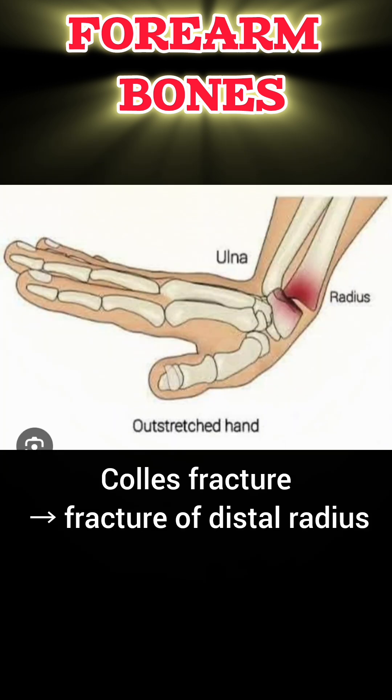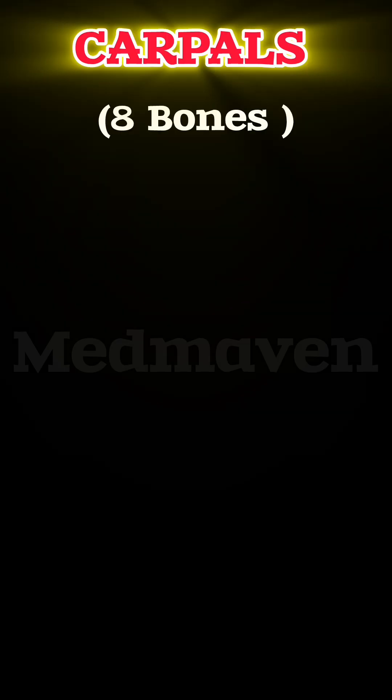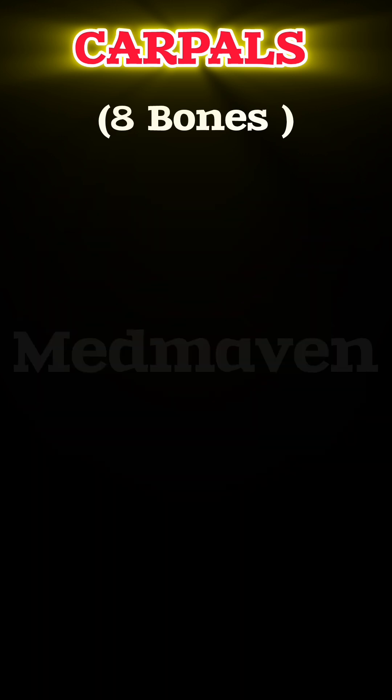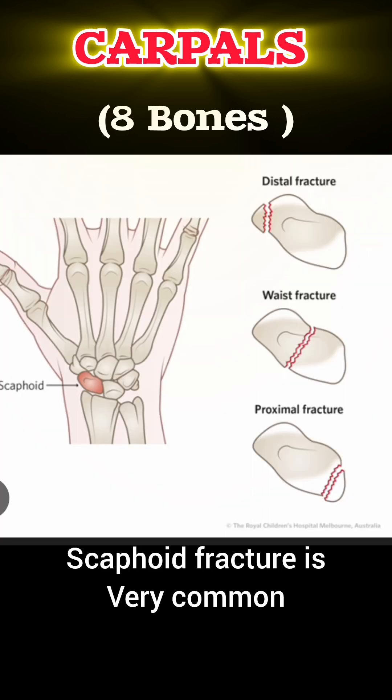Colles fracture is due to a fracture of the distal radius. The hand has 27 bones divided into 3 groups. Carpals: 8 bones in 2 rows consisting of scaphoid, lunate, triquetrum, pisiform, trapezium, trapezoid, capitate, and hamate. Remember by the mnemonic: She Looks Too Pretty, Try To Catch Her. Scaphoid fracture is very common.